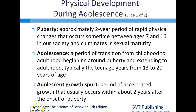Adolescence is defined as a period of transition from childhood to adulthood beginning around puberty and extending to adulthood, typically the teenage years from age 13 to 20. Because so many physical changes are happening, there is what we call an adolescent growth spurt—a period of accelerated growth that usually occurs within about two years after the onset of puberty. Sexual maturity is considered reached soon after the growth spurt ends.